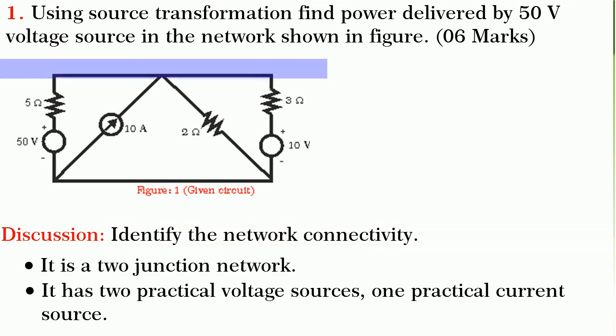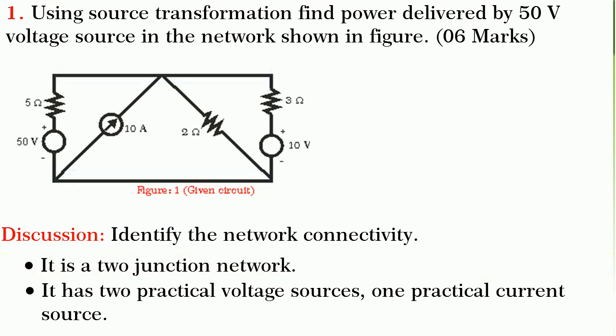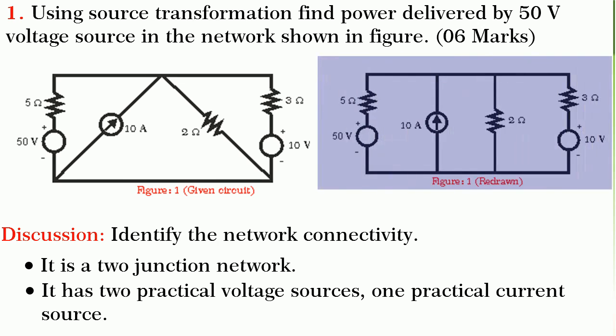The important requirement is to identify the network connectivity. If you observe the network, you should be able to identify that it is a two junction network. Let us draw the simplified network without changing the connectivity as shown in figure.